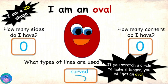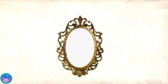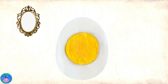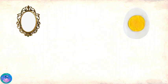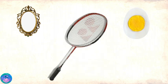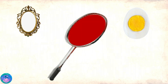Zoe, now you know me well! Can you identify some objects that have my shape? This beautiful mirror! This boiled egg slice! This badminton racket! That looks like an oval too!